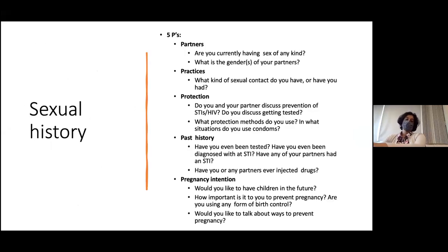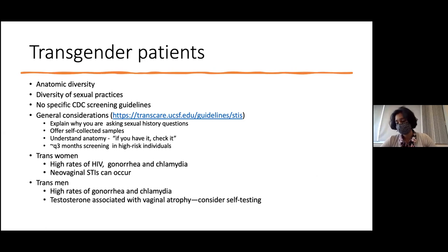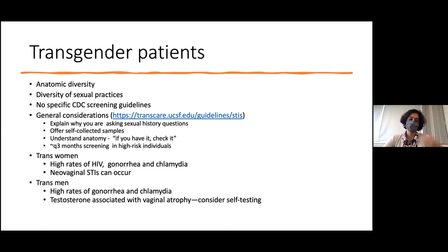Understanding sexual history is key. The CDC has a five Ps approach to sexual history, which is more thorough than what many clinicians routinely do. For transgender patients, the CDC guidance is to ask about anatomy and sexual behaviors and screen accordingly. The UCSF Transgender Healthcare website and Fenway Health presentations offer more specific guidance, recommending roughly quarterly screening in high-risk individuals — those with multiple sex partners, partners with multiple partners, or history of STIs.